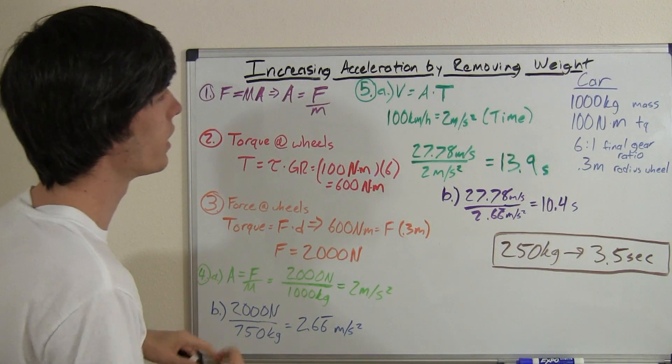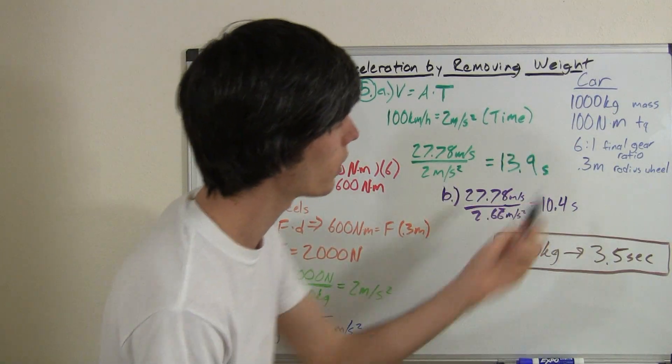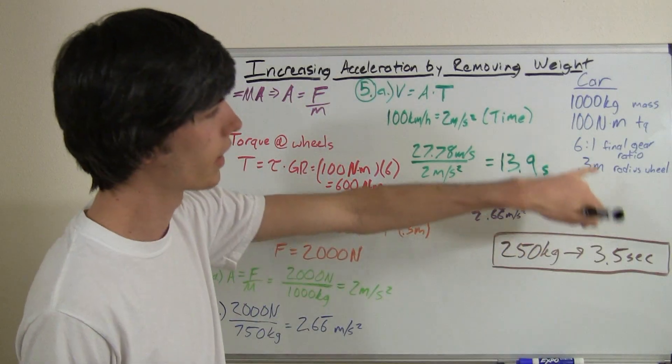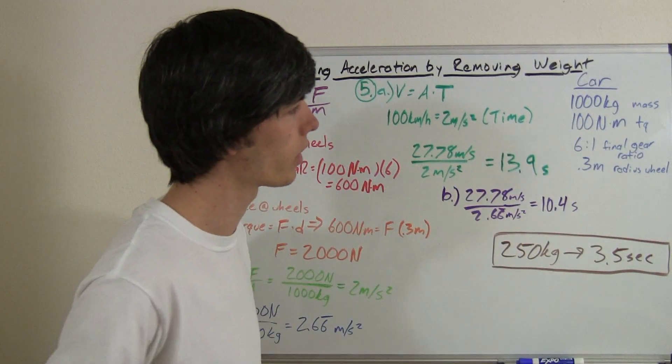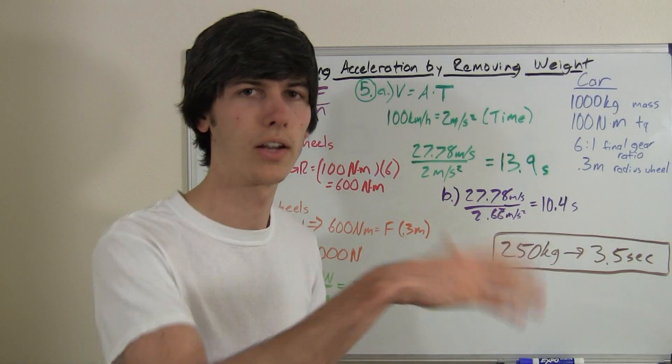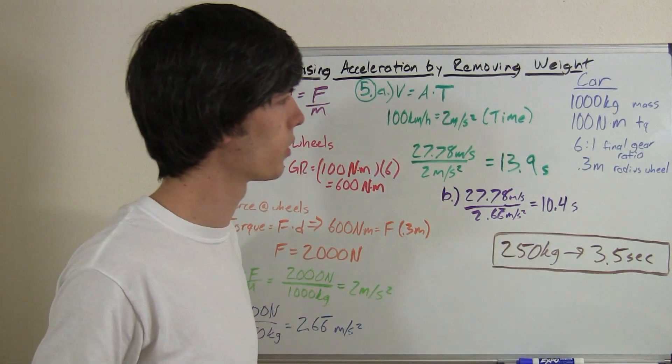So what we've got going on here, we're going to use a car with a 1,000 kilogram mass. It's going to be producing a constant 100 newton meters of torque across the entire rev range. I know that's not possible.